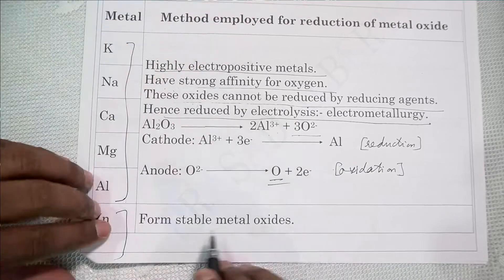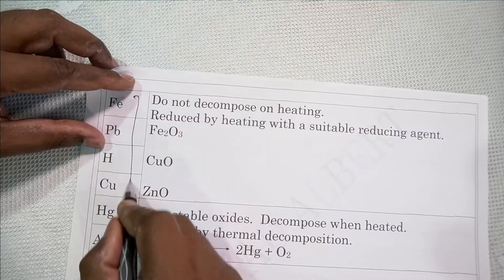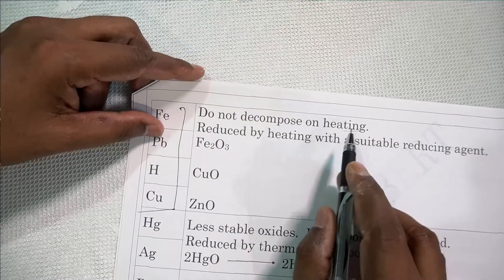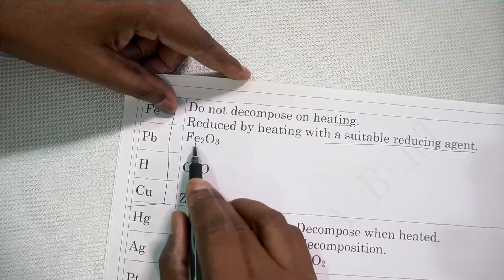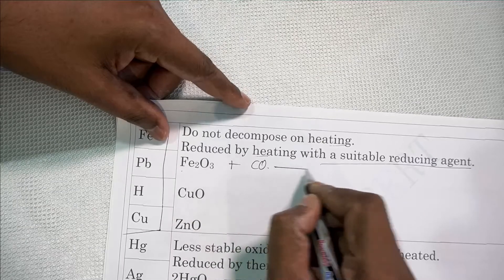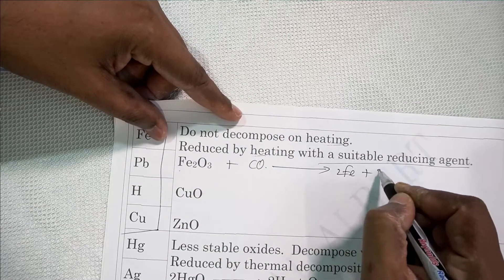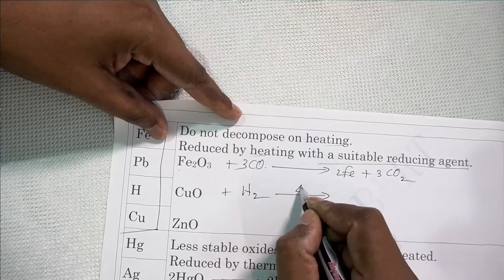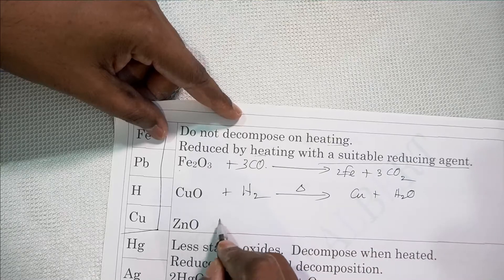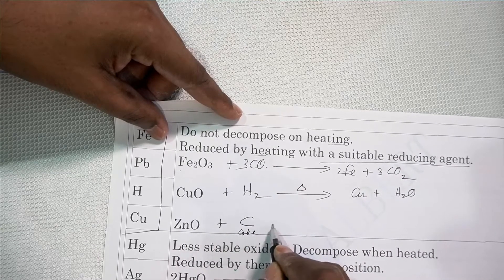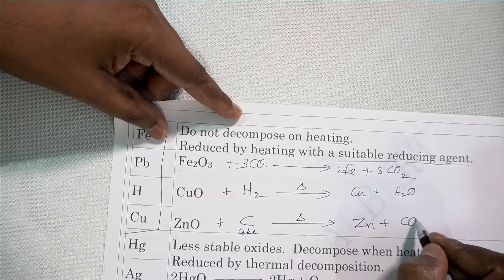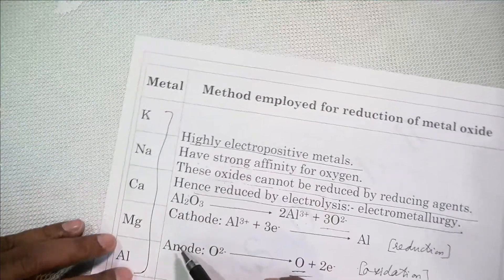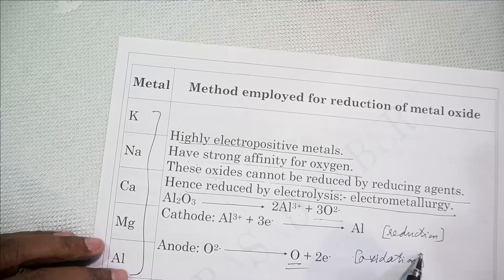Metals below this — zinc onwards up to copper — form stable oxides. These metals form stable oxides and do not decompose on heating. They are reduced by heating with a suitable reducing agent. For example, Fe₂O₃ can be reduced by carbon monoxide: heating with 3CO gives Fe plus 3CO₂. Copper oxide can be reduced by hydrogen — pass hydrogen and heat to get Cu plus H₂O. Zinc oxide can be reduced by coke, a form of carbon acting as a reducing agent, giving zinc and carbon monoxide. So reducing agents can be used for these metals, whereas highly electropositive metals cannot be reduced by reducing agents — electrometallurgy is required there.